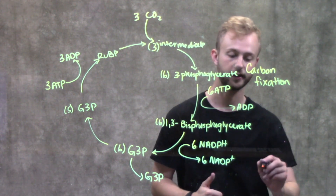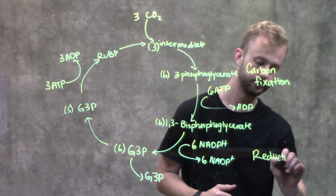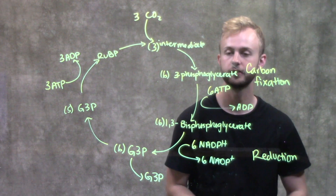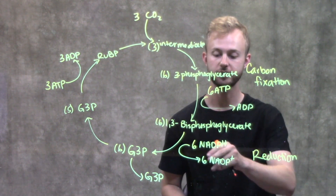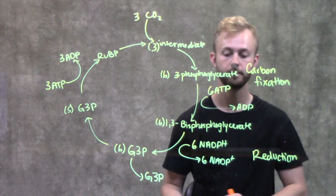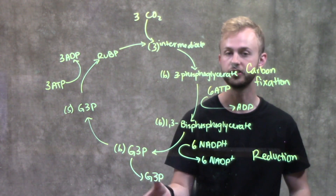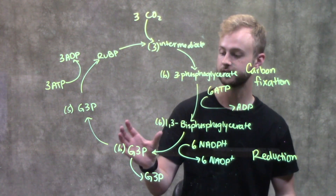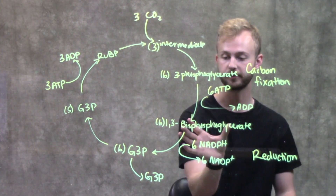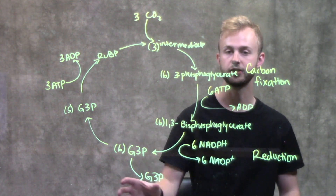Moving on to the next phase of the Calvin Cycle, we have our reduction phase. In the reduction phase, we're going to start out with the 1,3-bisphosphoglycerate, and then we're going to reduce that using the NADPH that we produced from our linear electron flow to create glyceraldehyde 3-phosphate, or G3P. We're going to have 6 of those molecules because we had 6 1,3-bisphosphoglycerates and 6 NADPH just to make 6 G3Ps.